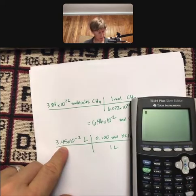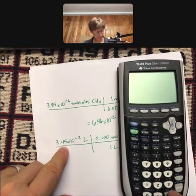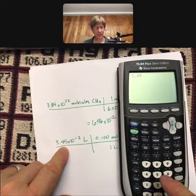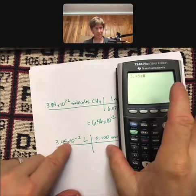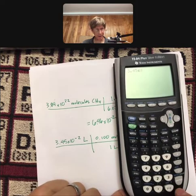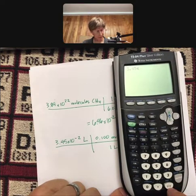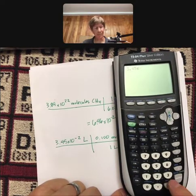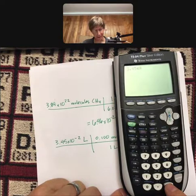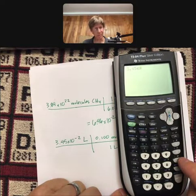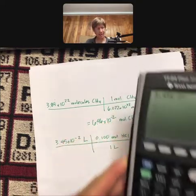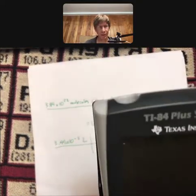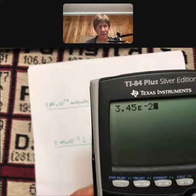So I'm going to do 3.45. And then I'm going to hit second function EE. That gives me my E. And then down here I'm going to hit the minus sign to add a minus or a plus sign. And then I'm not going to hit the subtract sign though. So I'm going to hit minus, and then we hit 2. And this is 3.45 times 10 to the minus 2.